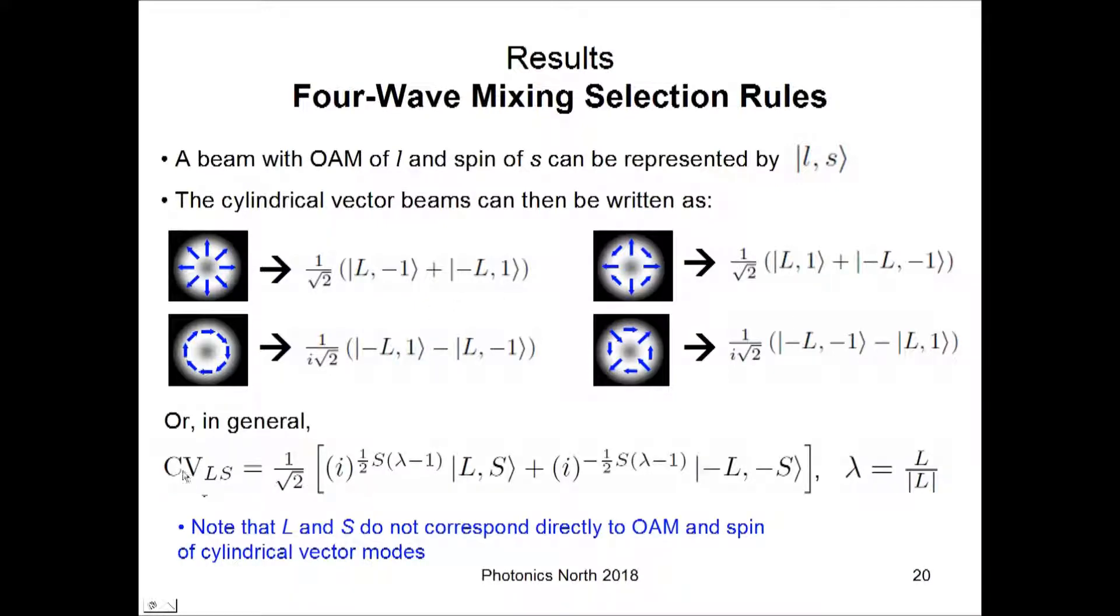And combining those together, you can express them as this: CV indexed by big L and big S. These should be taken as indices rather than as angular momenta. Because looking at these equations, you can see that the CV modes don't have a definite value of OAM or spin. So, these are indices, not angular momentum, although they do relate back to the angular momenta. And this equation is just the sum of two of these OAM beams, one here and one here with some phase factors out front. The lambda that appears in the exponent here is just the sine of L.